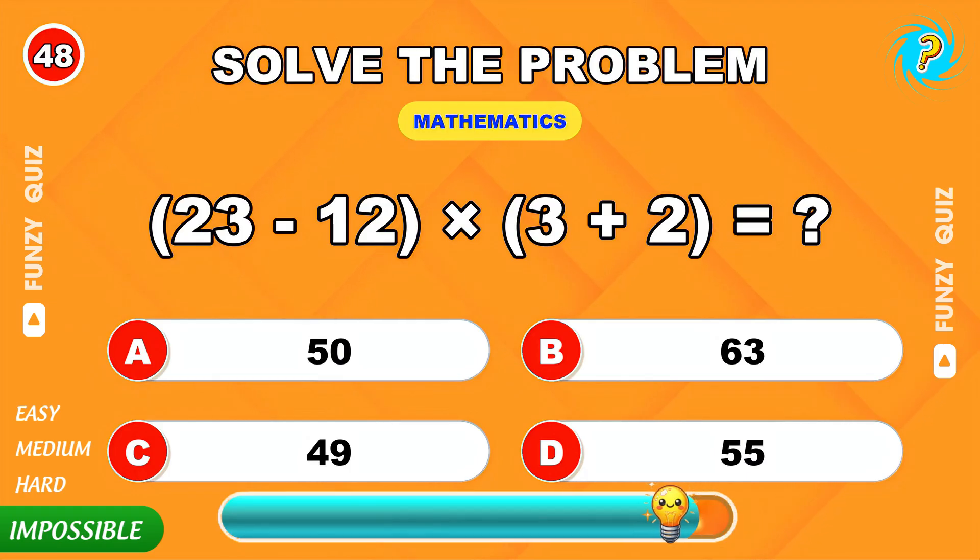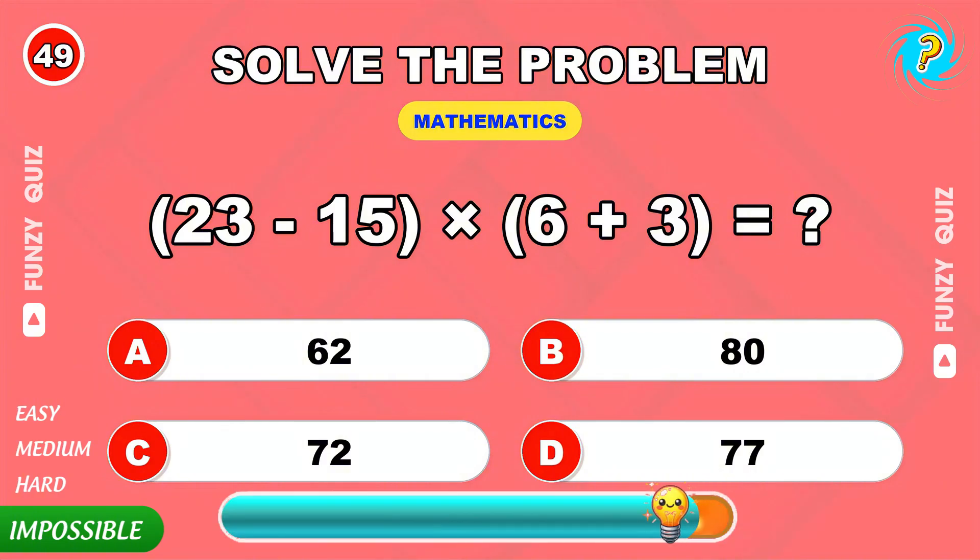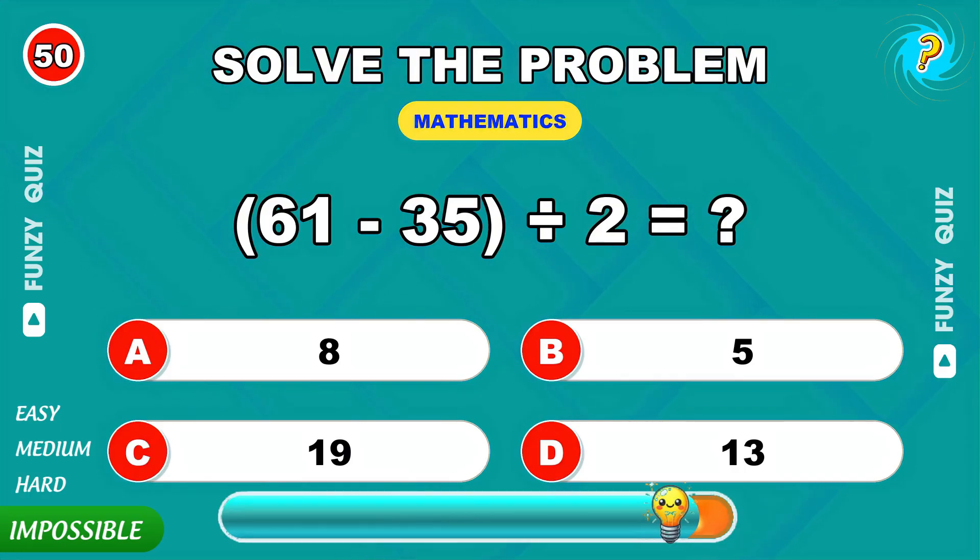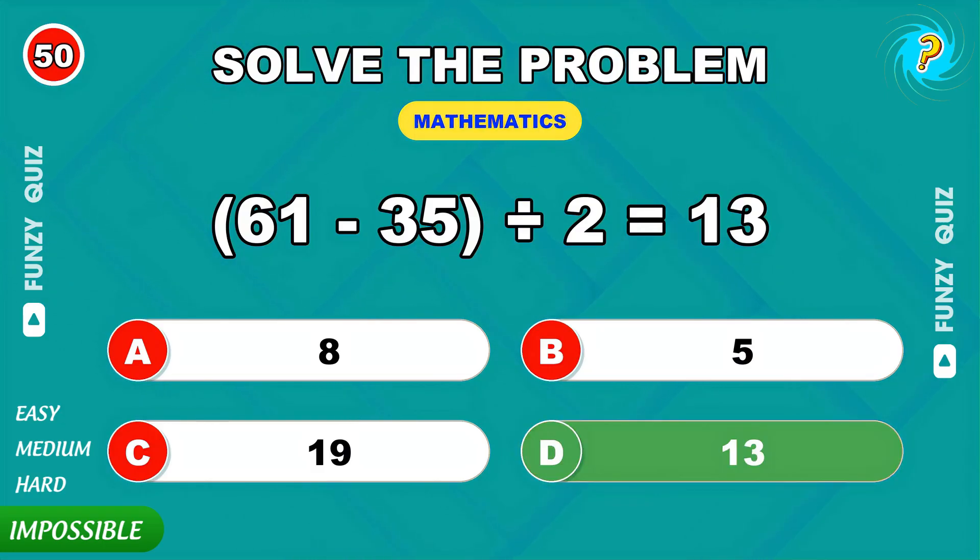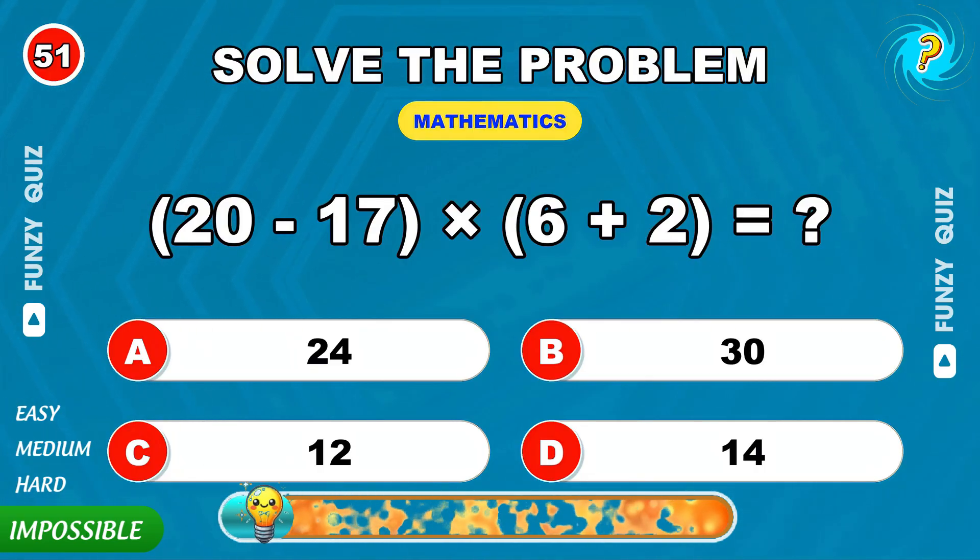23 minus 12 times 3 plus 2. The answer is 55. Calculate 23 minus 15 times 6 plus 3. 72. 61 minus 35 divided by 2. 13. 20 minus 17 times 6 plus 2. 24.